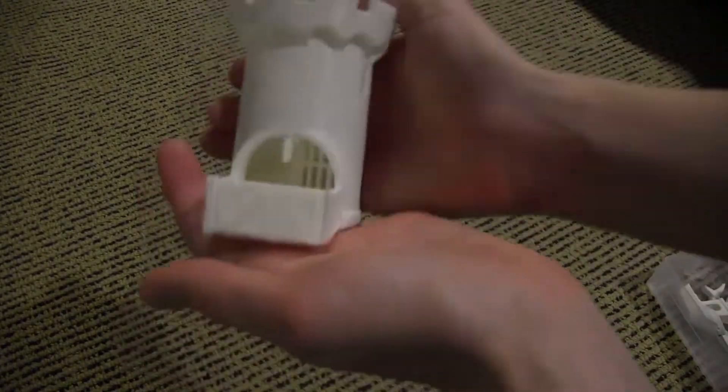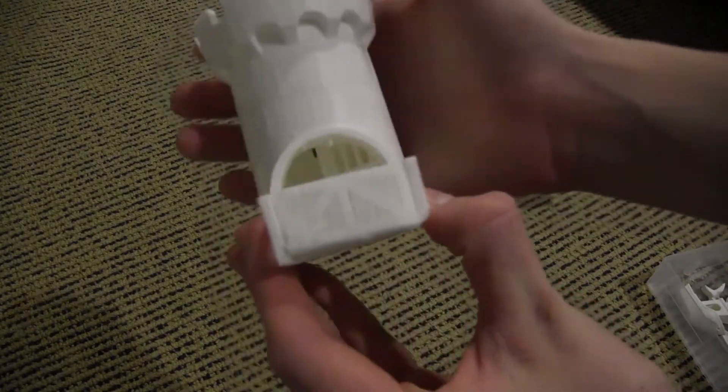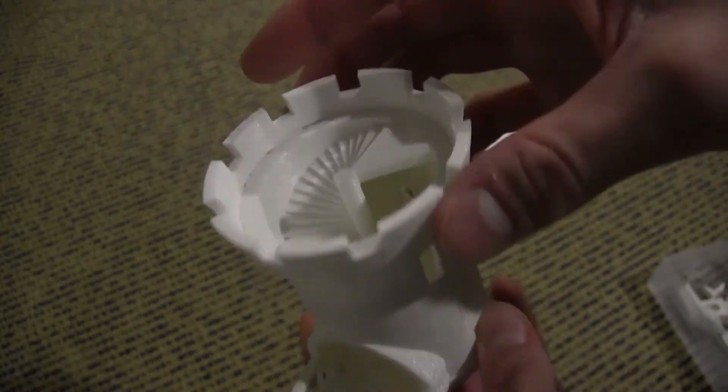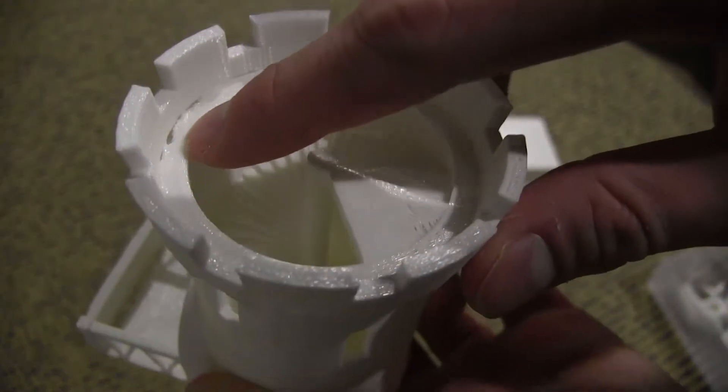Here we have a dice tower and the gate can move up and down. There is some warping, so once again could have been my printer's fault. You can see it isn't completely filled in right there.